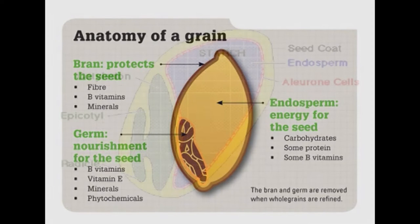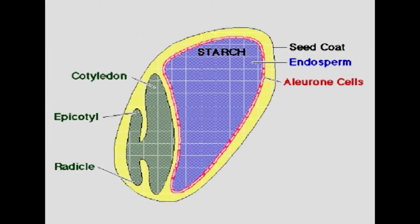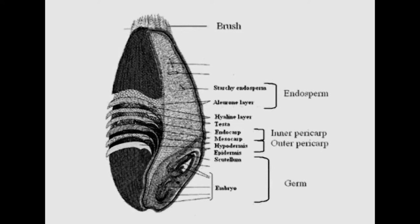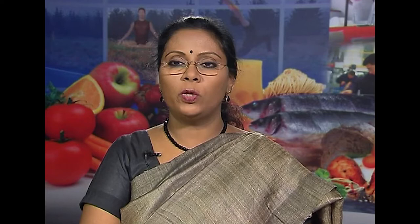The endosperm is surrounded by one or more layers of cells known as the aleurone layer. In wheat, this layer is a single layer of thick-walled cubical cells and constitutes 7% of grain weight. The cells contain about 20% protein, oil and mineral matter. The cells are also rich in nicotinic acid. The aleurone cells also contain tiny grains of phytic acid with some protein.